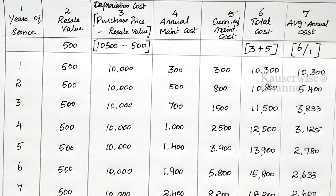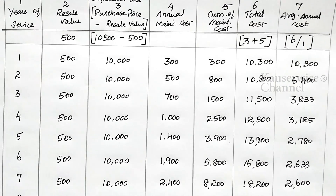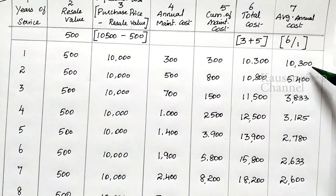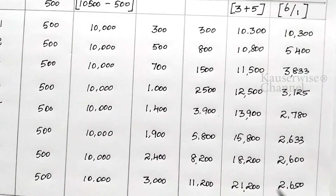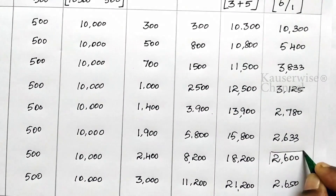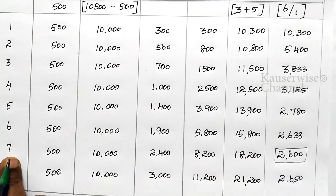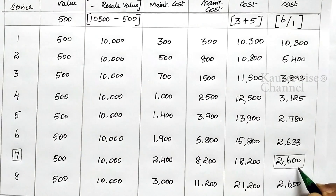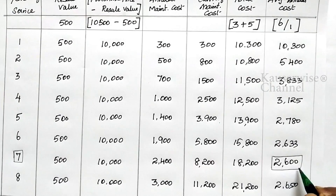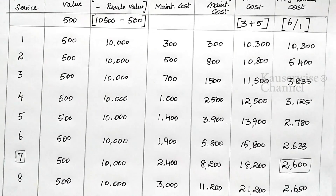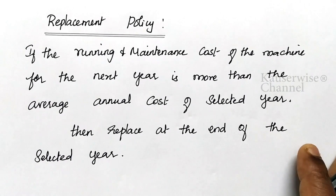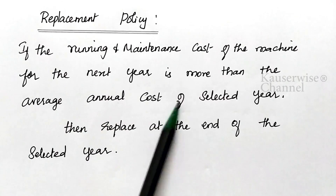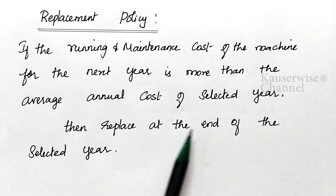Now you have to decide which year to replace the machine by finding the minimum average annual cost. The least value in this column is 2,600, which falls under the 7th year. So the optimum replacement period is the 7th year, because in this year the average annual cost is at its minimum. Now check with the replacement policy: if the running and maintenance cost of the machine for the next year is more than the average annual cost of the selected year, then replace the machine at the end of the selected year.